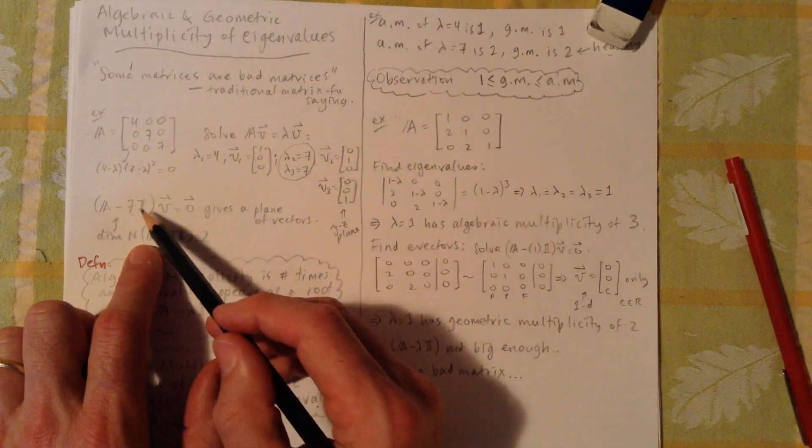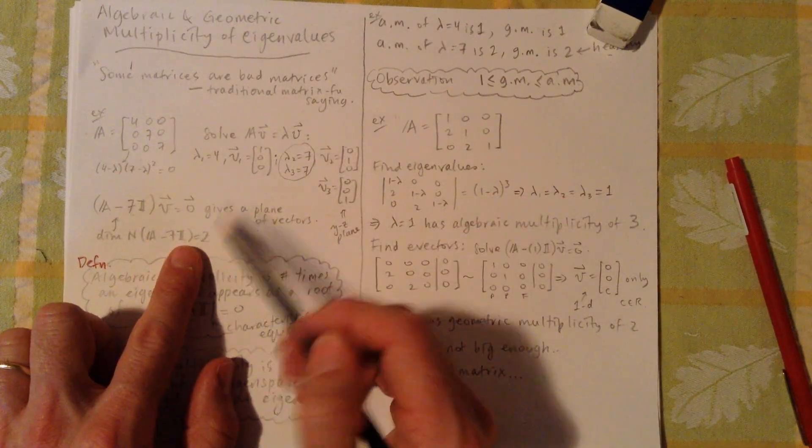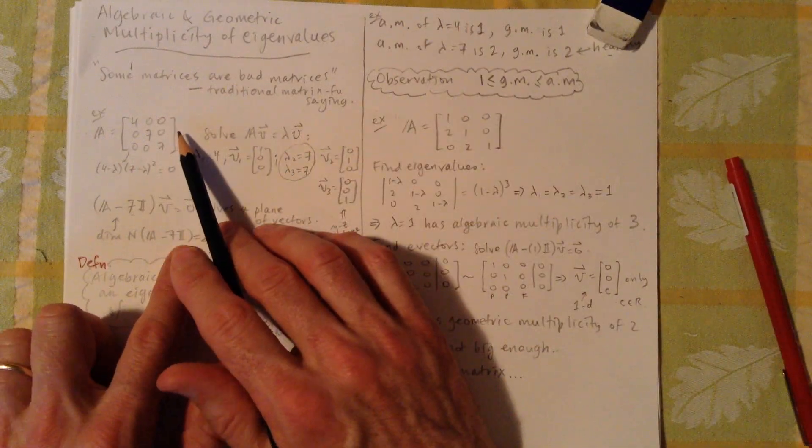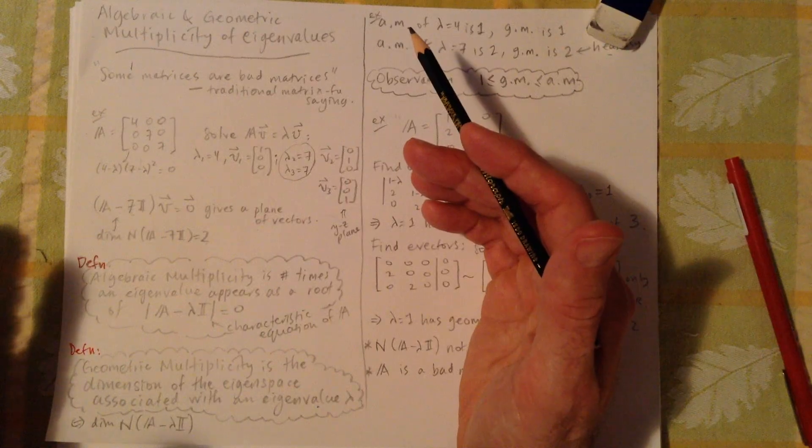So any vector that's pointing in the yz plane, x, y, z, any vector pointing in this plane will be multiplied by 7 if it's multiplied by this matrix. And any vector pointing in the x direction will simply be amplified by a factor of 4. So it likes to grow things, but it disproportionately grows them in the yz plane. So the dimension of that null space is 2, right? And so we consider this to be kind of a good thing. This is a healthy matrix that has a full set of eigenvectors.